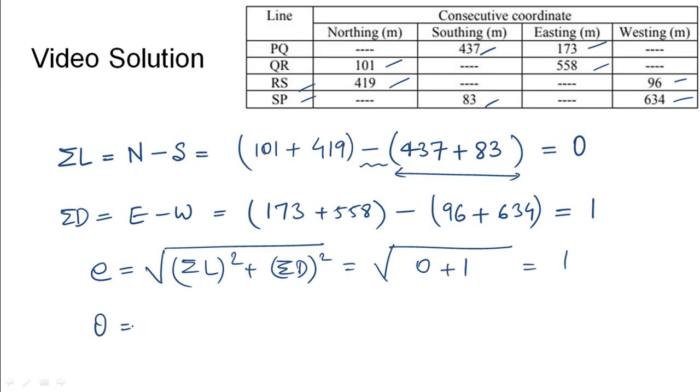And the angle of the closing error will be tan inverse of summation of departure by summation of latitude. This would be tan inverse of 1 over 0 which would be tan inverse of infinity. We can see that this would turn out to be pi by 2 or 90 degrees.